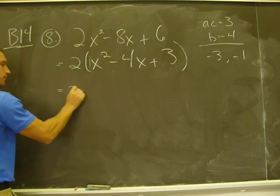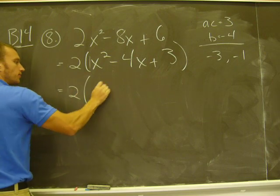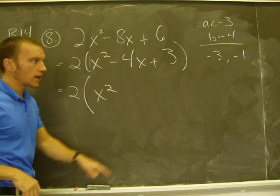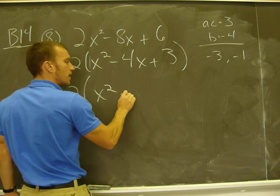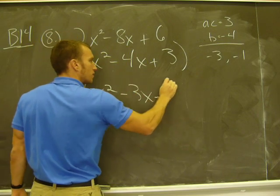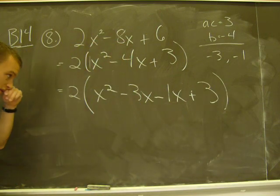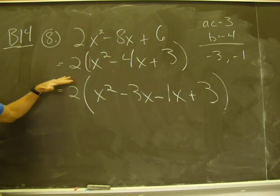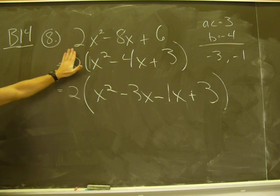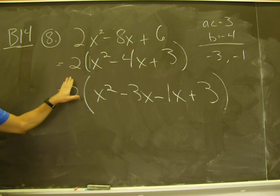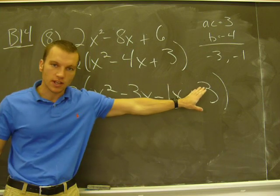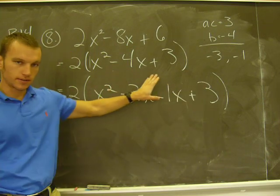So the next step here is to rewrite that negative 4x using those two numbers. That is negative 3x minus 1x plus 3. Now don't worry about this 2 out here. That's not going to really affect the rest of the work I do. I've already factored it out. It just kind of comes along for the ride. That's not going to affect the further factorization of this quadratic inside.